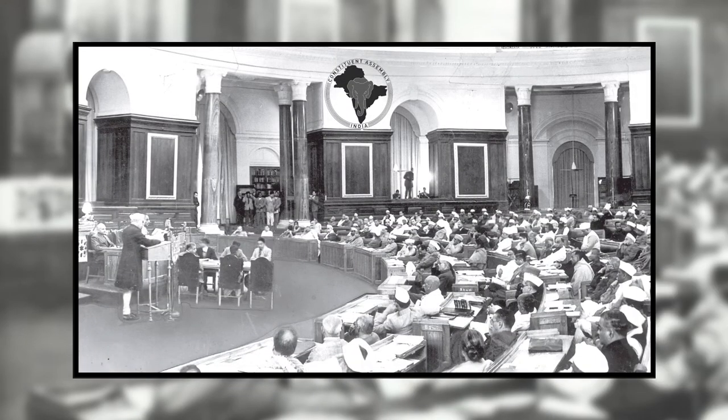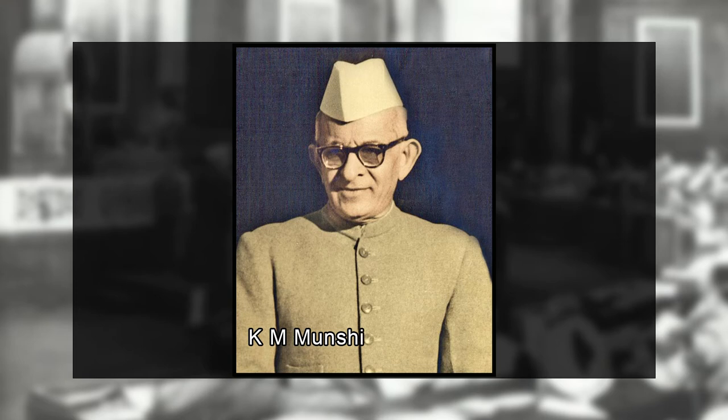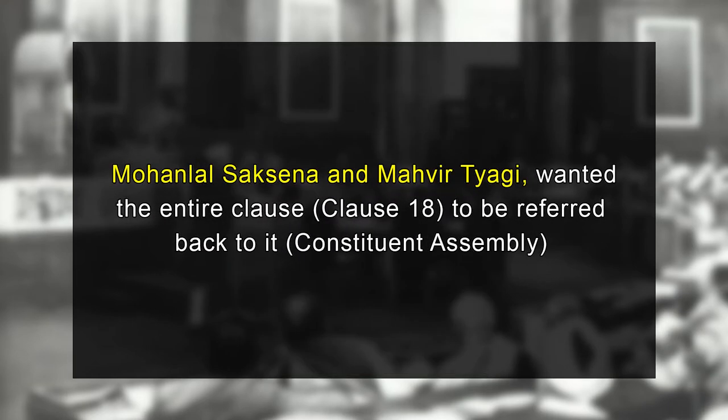Let's now look at the question of minority rights. One more interesting debate during the proceedings of the Constitutional Assembly was the question of minority rights. It generated a lot of heat even before the Muslim members joined the proceedings — it actually started with the Christian members of the assembly. In the course of debate, K.M. Munshi moved that one part of clause 18 be referred back to the advisory committee, while Mohanlal Saxena and Mahavir Tyagi wanted the entire clause to be referred back.